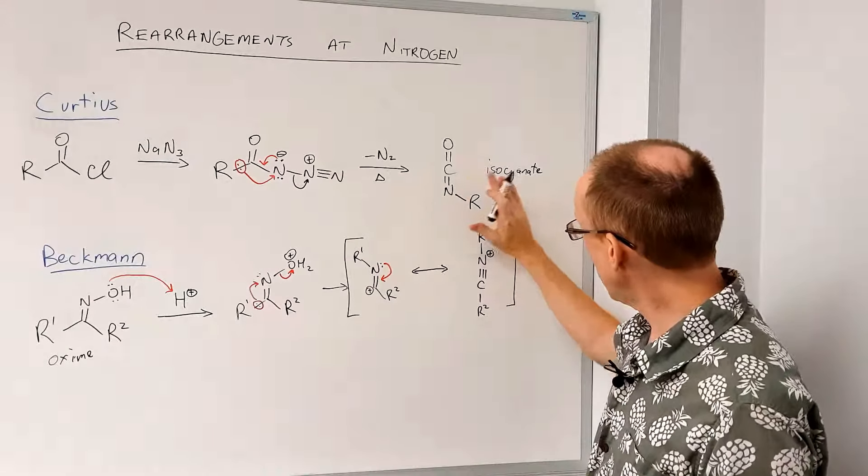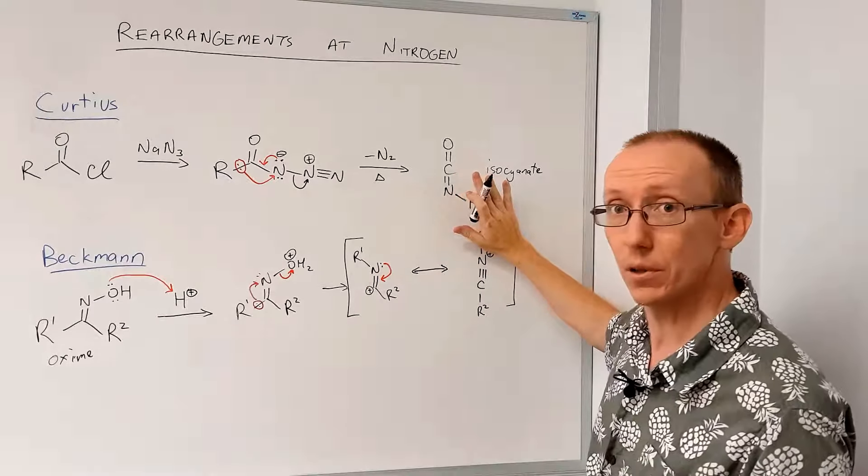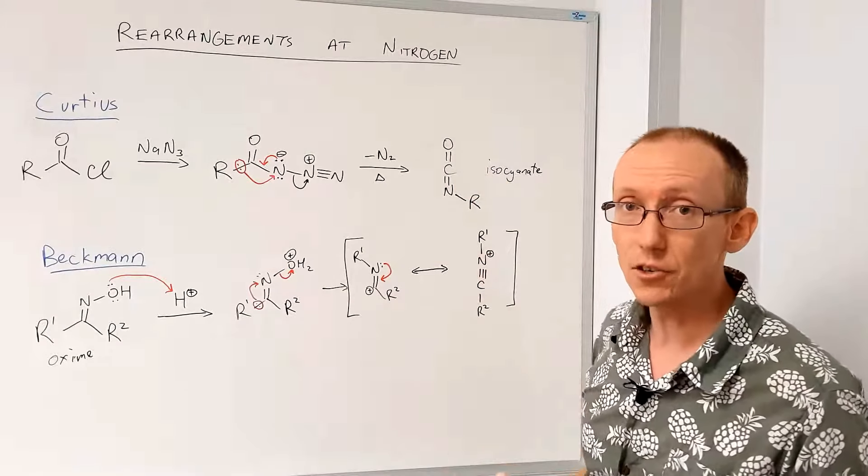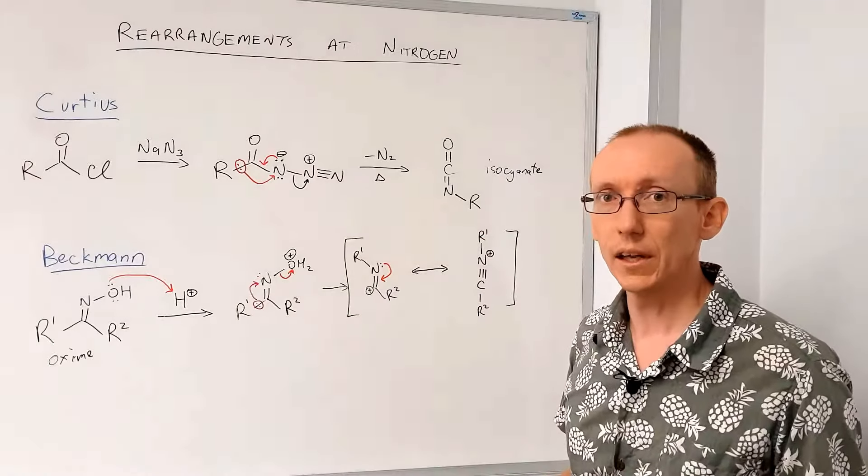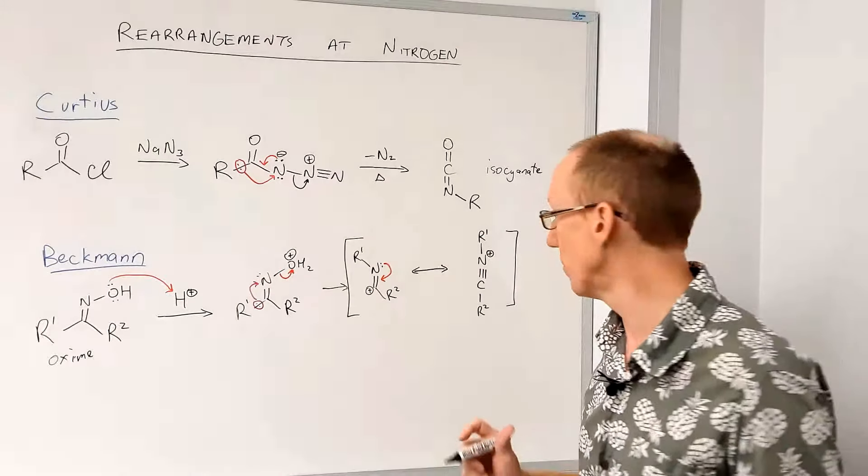Now this, if that group was missing and we were missing the positive charge, that would be a nitrile, but it now has a positive charge and a group attached to it, so we call that a nitrilium ion.